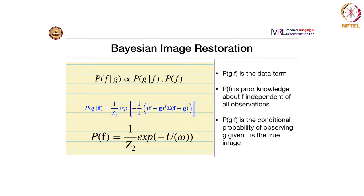There we assumed some prior knowledge about the noise in the image, which is basically zero mean additive noise — the expectation goes to zero. In linear filtering especially, we have some constraint on the image in the sense that it is locally constant.